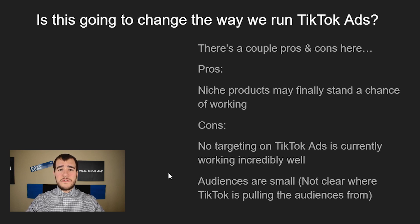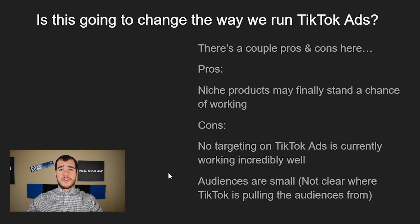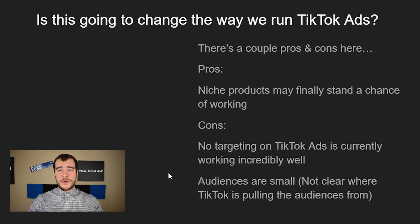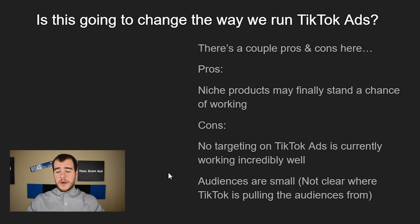I expect changes over the next few months — bigger audience sizes, easier accessibility, maybe a full list of every available interest. Right now you can only search and see what pops up. A suggestions tab like Facebook's, where you type 'relationships' and get all related interests, would be really useful. Honestly, the closer they can get to Facebook's targeting system the better — it would be absolutely perfect. But it's a completely different platform, not run by the same people.